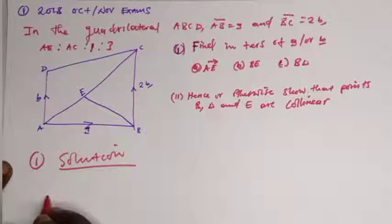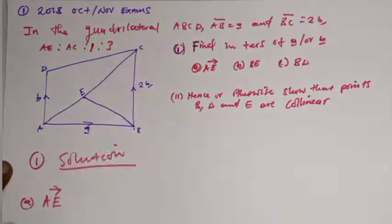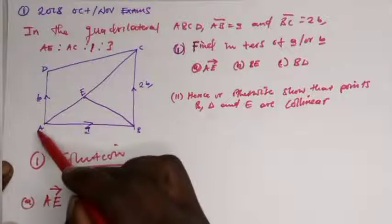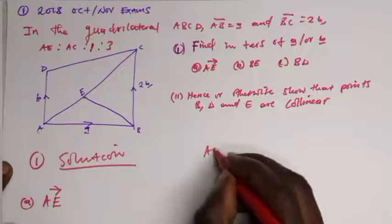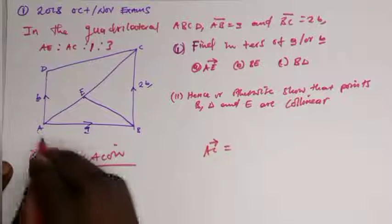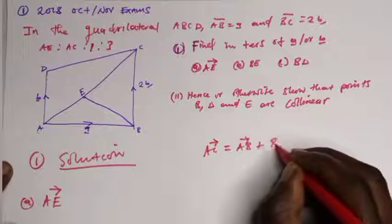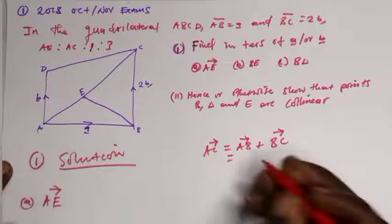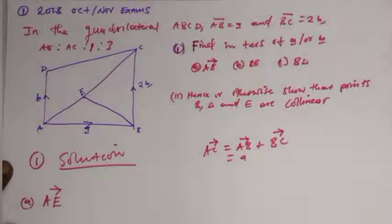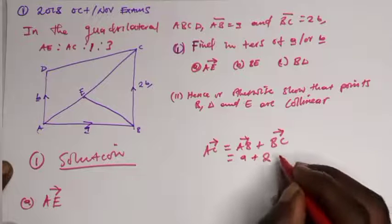Let's find vector AE. To find vector AE, you first need to find vector AC. Vector AC equals vector AB plus vector BC, which gives us a plus 2b.